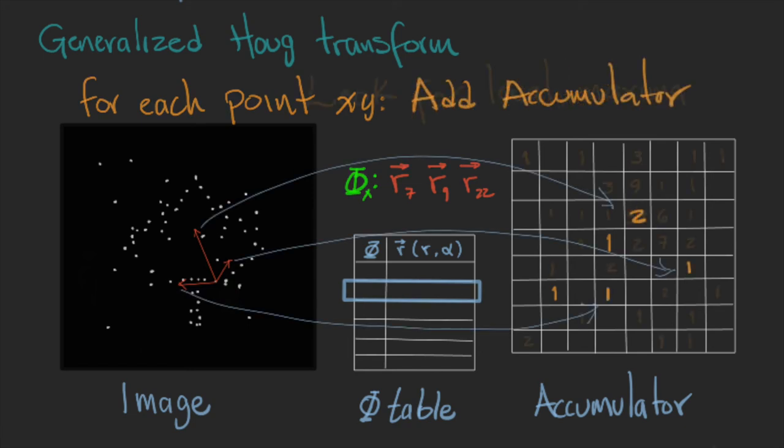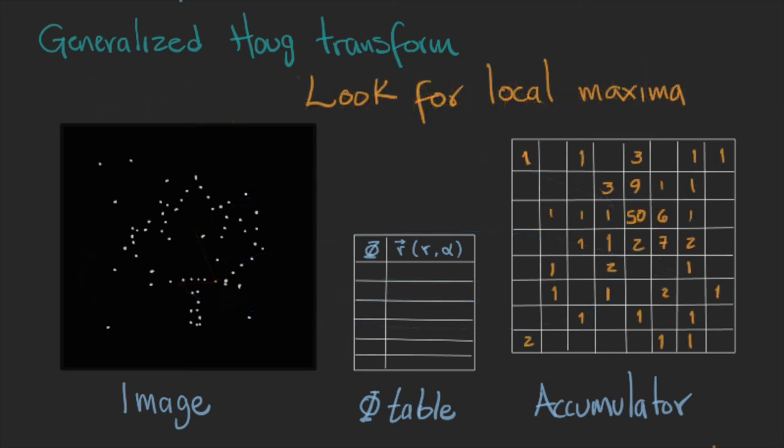Once you have visited all the points, your accumulator matrix will have a maxima that shows the location of the anchor point of the shape, in the same way as in the circle example.